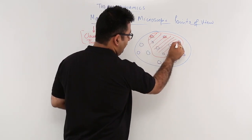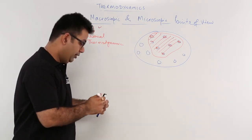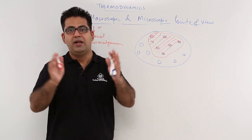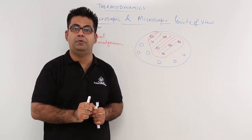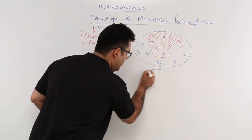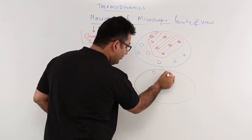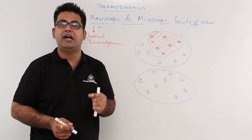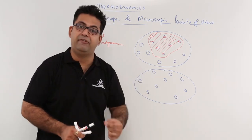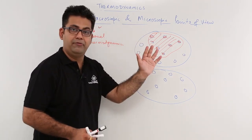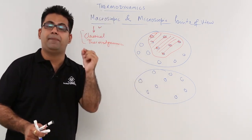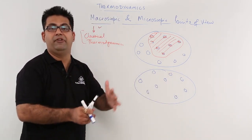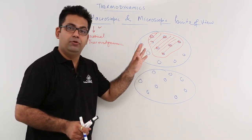We are assuming a major bulk of this substance to be one single entity, although there are different molecules which are separate entities in themselves. Now in the microscopic point of view, the assumption is the same — any substance is made up of a very large number of very small molecules. Let me draw this diagram again. This is the substance, made up of very small and an infinite number of particles. Each particle will have a different kind of motion, a different kind of velocity, and a different position at every time. In the microscopic point of view, we need to consider each molecule as a separate entity.